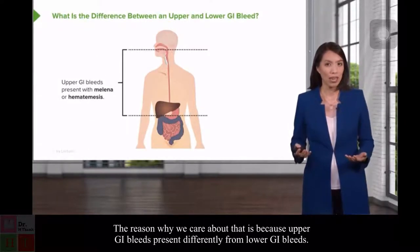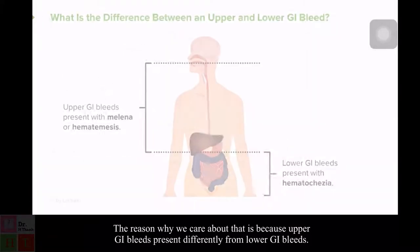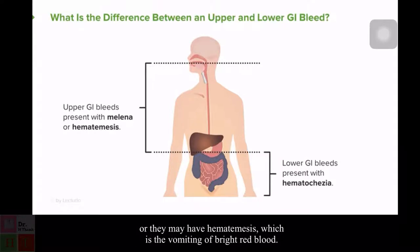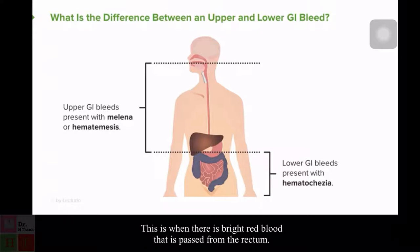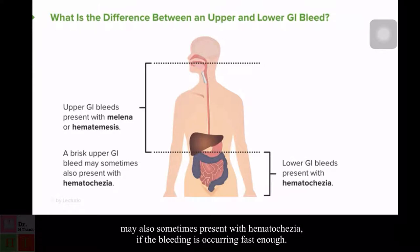Upper GI bleeds present differently from lower GI bleeds. With an upper GI bleed, patients tend to come in with melena, which is dark or black colored stools, or they may have hematemesis, which is the vomiting of bright red blood. Lower GI bleeds tend to present with hematochezia, which is bright red blood passed from the rectum. Keep in mind, however, that a very quick upper GI bleed may also sometimes present with hematochezia if the bleeding is occurring fast enough.